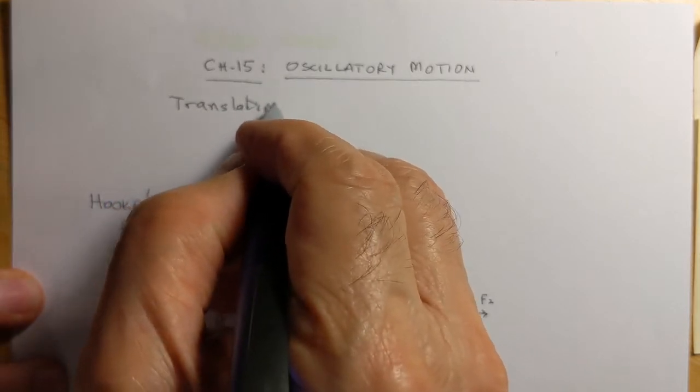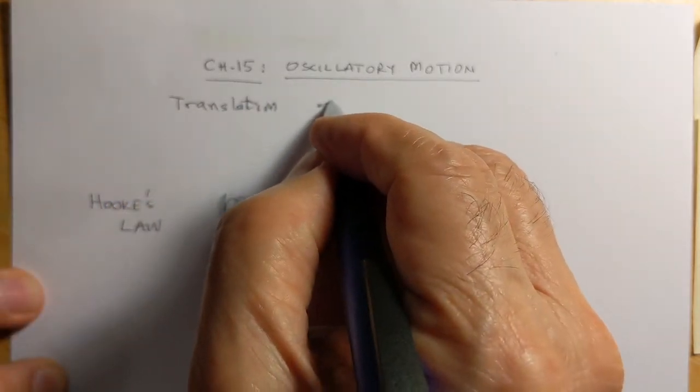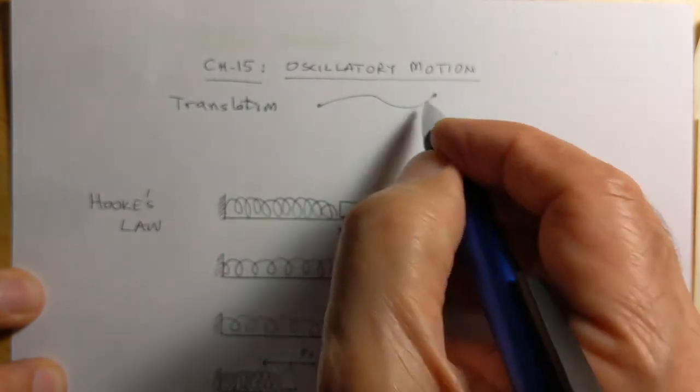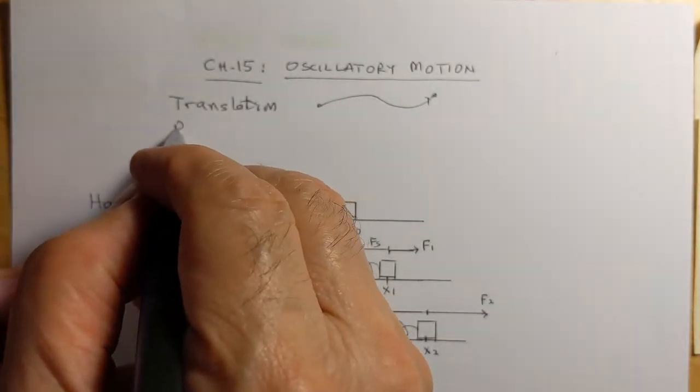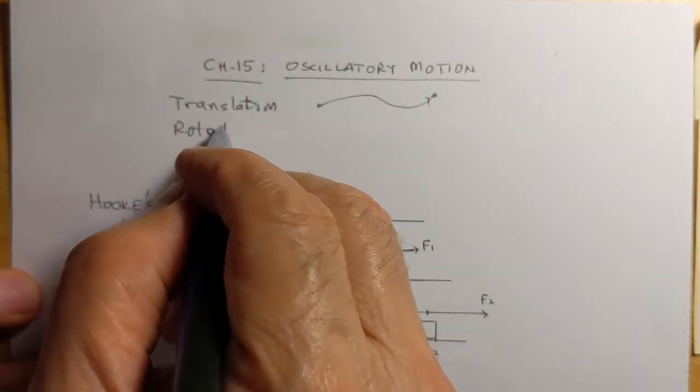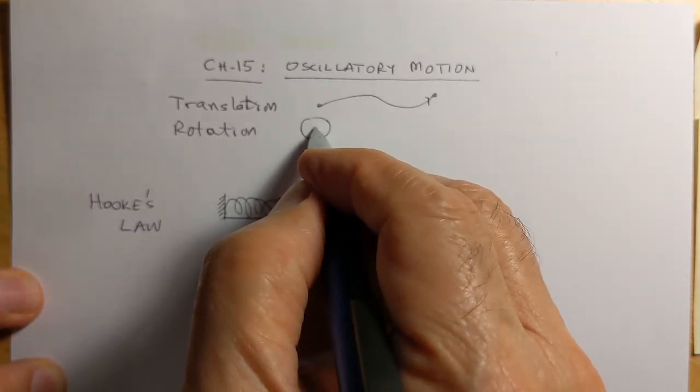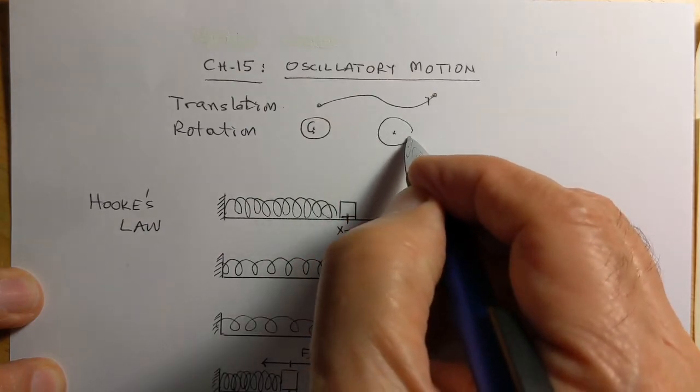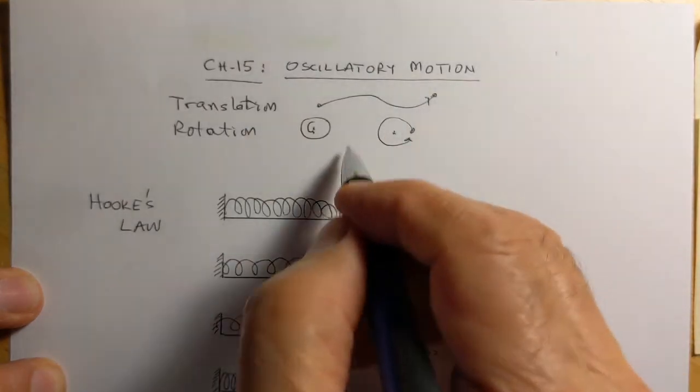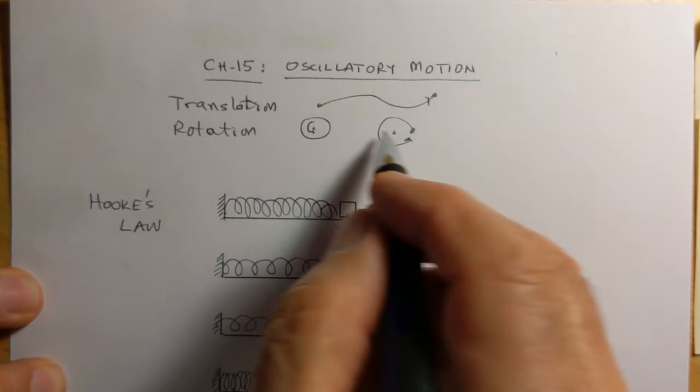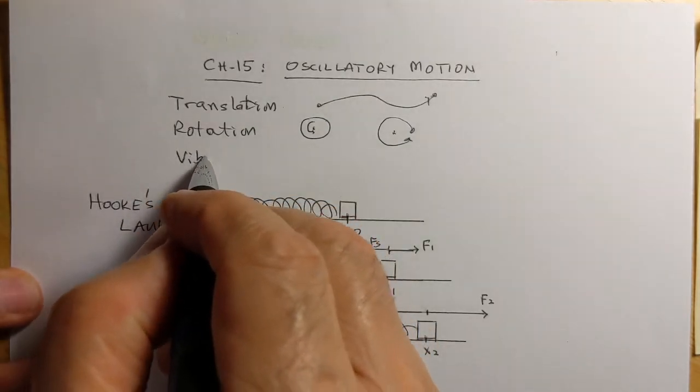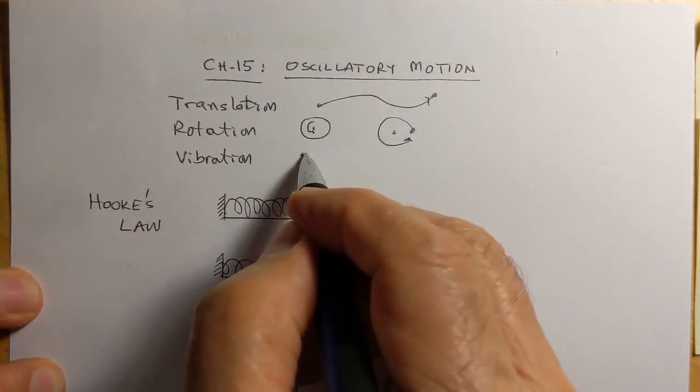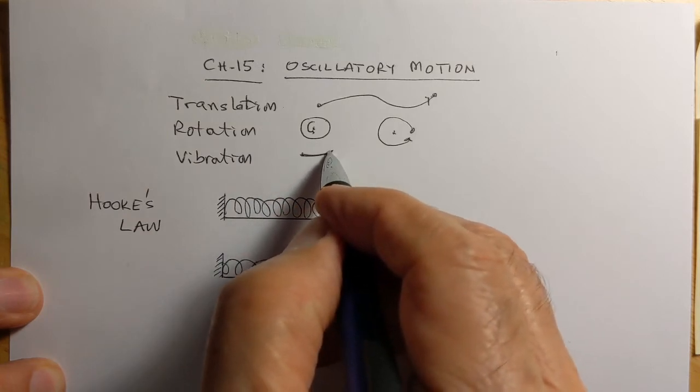We have translatory motion, or translation, where an object goes from one place to another. Then we have rotation where an object spins about an axis or it could go around something else, so that's rotational motion.